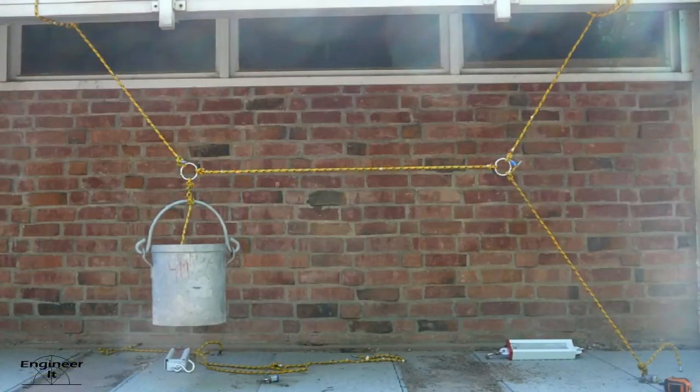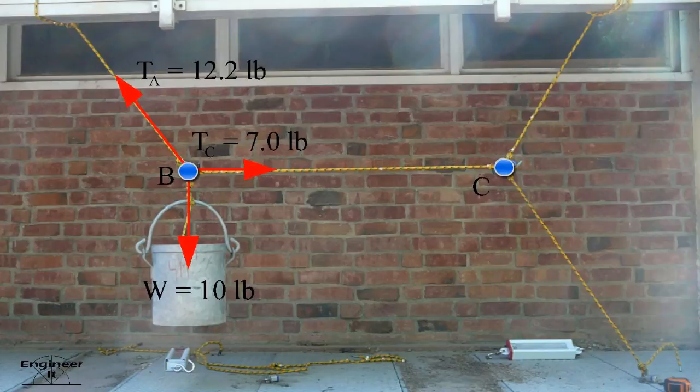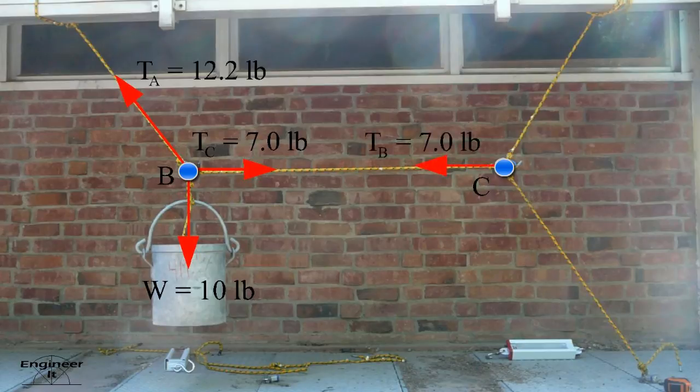Let's go back to the system. The tension at point B pulls towards point C. But Newton's third law says for every action there is an equal and opposite reaction. So the tension at point C must pull towards point B.